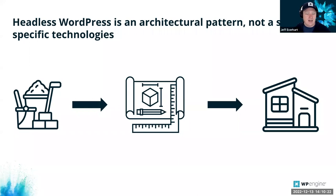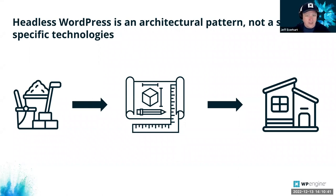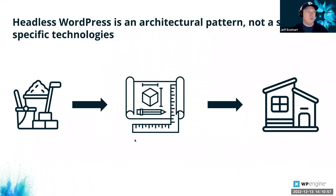I liken this to building a house because if we look at how homes are constructed all over the world, there are lots of different construction techniques. Here in the United States we use wood framing, but you might have masonry or steel frame structures. You can have all sorts of exteriors and architectural affordances. Both structurally and aesthetically, there's a wide variety — and that's the same with headless WordPress. It gives developers a lot of flexibility in determining how to approach building a particular piece of digital real estate.